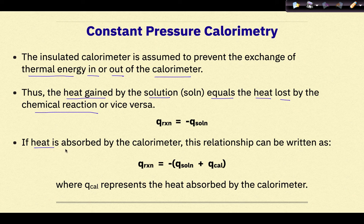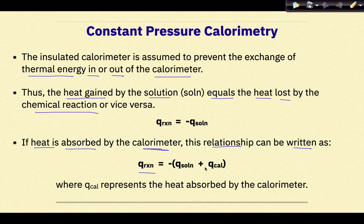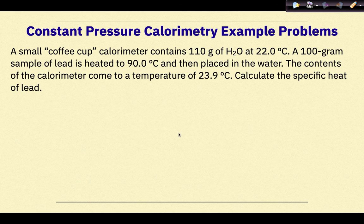If heat is absorbed by the calorimeter, the relationship can be written as q reaction equals negative q solution plus q cal, where q cal represents the heat absorbed by the calorimeter. Let's do a few examples.